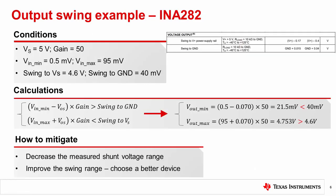Let's look at an example of how to quickly select the right current sense amplifier by applying the swing to rails as a criterion. In this example, we have VS equals 5 volts, gain equals 50. The min and max input voltages are 0.5 millivolts and 95 millivolts, respectively. We want to see if the INA282 can work from the perspective of output swing.